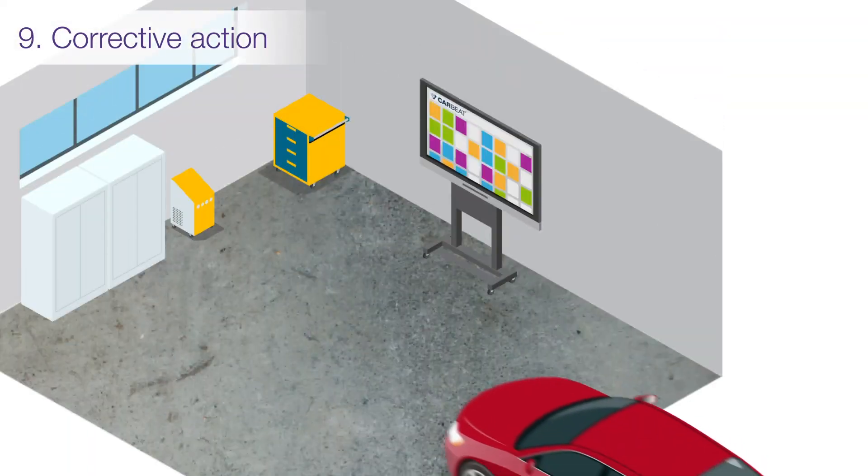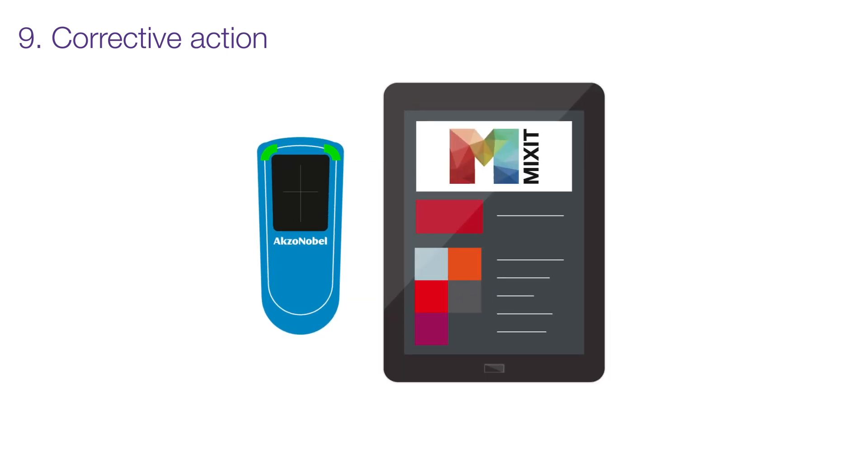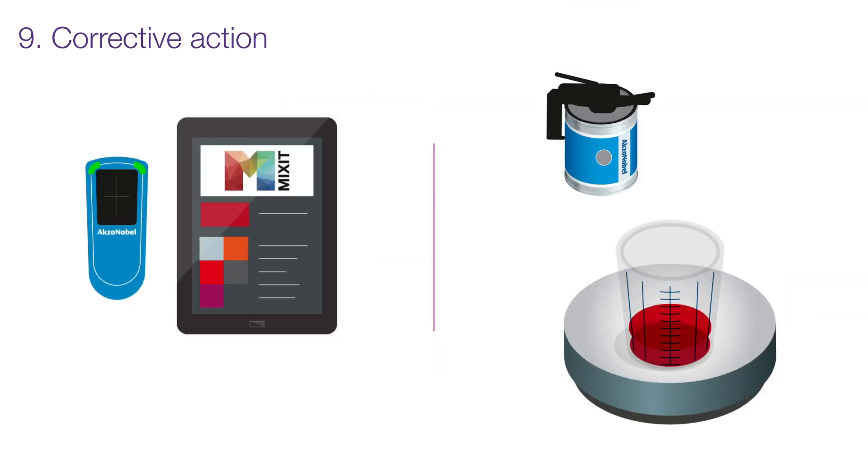While our process is designed to get the color right the first time, things sometimes go wrong. A body shop can digitally correct the color recipe by using Automatic and Mixit or take a number of other measures such as manually tinting the color.